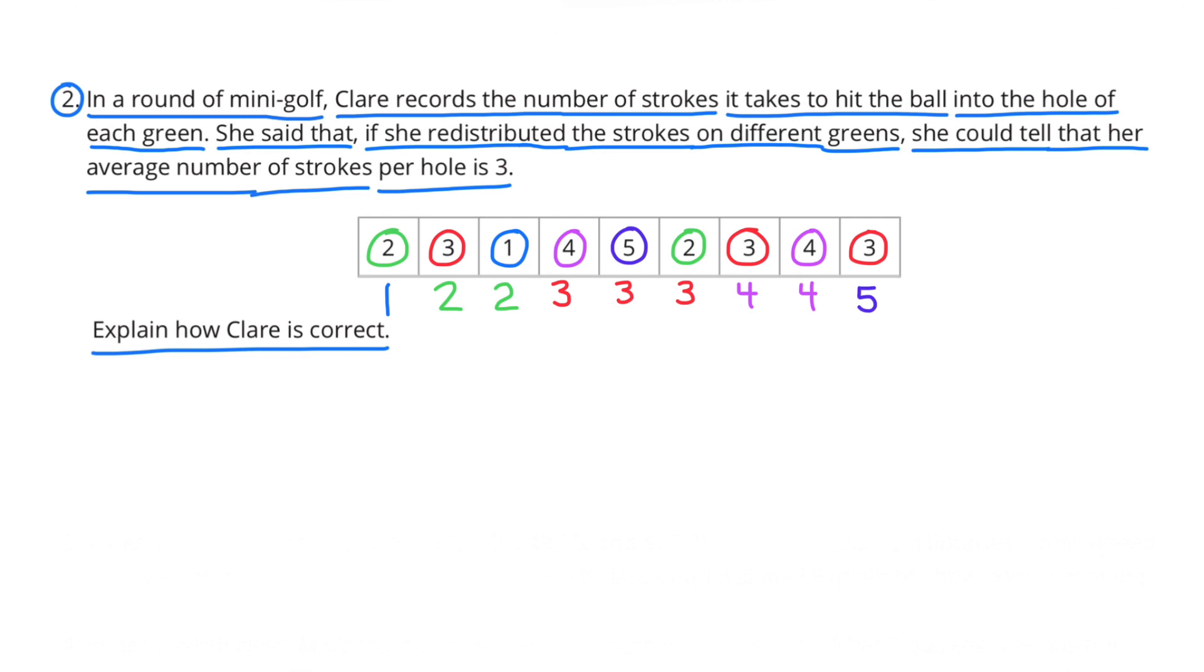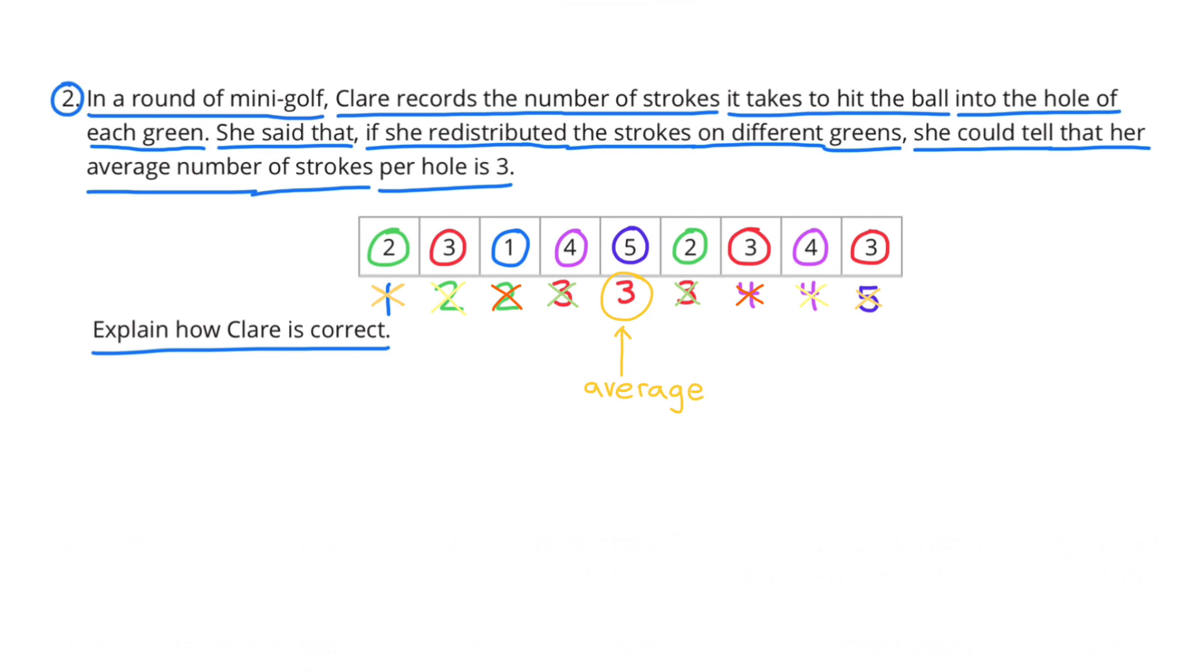I've redistributed the strokes in order from 1 to 5. One time she made a hole in one. Twice she took two strokes. Three times she took three strokes. Twice she took four strokes. And once she took five strokes. Now that I have them in order from 1 to 5, I can cancel out the 1 and the 5, because they're both two units away from 3. I can cancel out both the 2s and both the 4s, because both of those are one unit away from 3. And then I can cancel out the 3 to the left of the middle and the 3 to the right of the middle, because those are both equal to 3. And the number in the very middle is the average. 3 is the average.